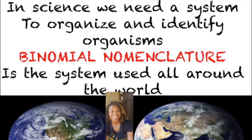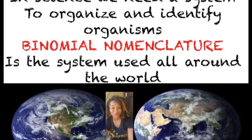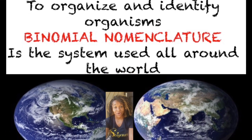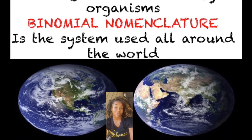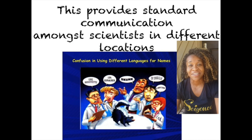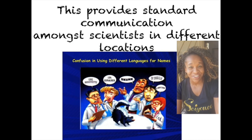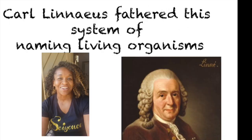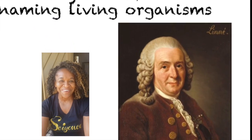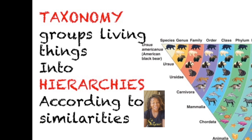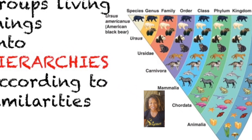In science we need a system to organize and identify organisms. Binomial nomenclature is a system used all around the world — it provides standard communication among scientists in different locations. Carolus Linnaeus followed this system of naming living organisms. Taxonomy groups living things into hierarchies according to similarities.